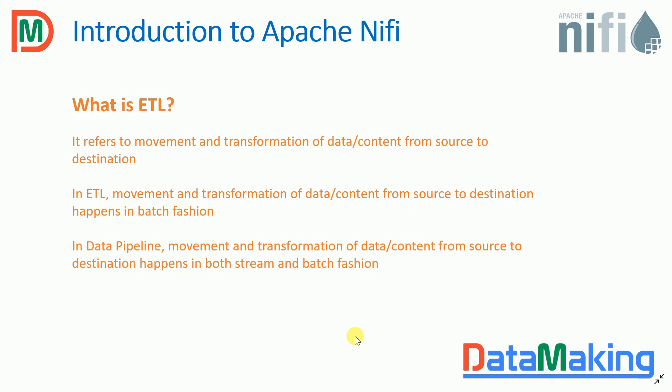ETL refers to Extract, Transform, Load. It is a movement of data from one source to another source, including transformation. ETL actually works in batch fashion. When people build data warehousing solutions, they take data from operational databases and pump it into the data warehouse with some kind of transformation. It happens mostly in nightly jobs — an ETL job triggered every night at 12 a.m., or early morning at 4 a.m., 3 a.m., 2 a.m. Mostly it works in batch fashion.